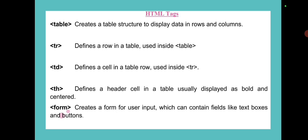td is used inside tr. th is the table header cell, which displays text as bold and centered. The form tag creates a form for user input, which can contain fields like text boxes and buttons.